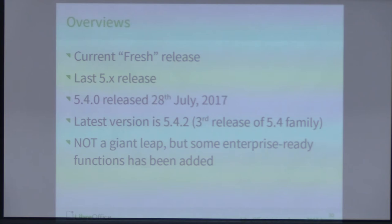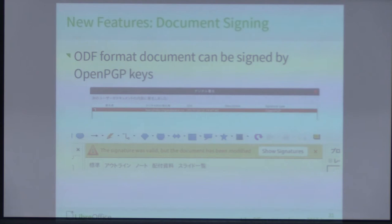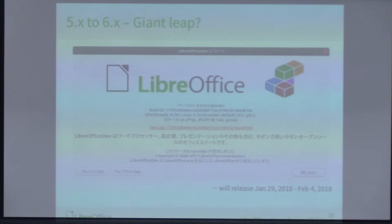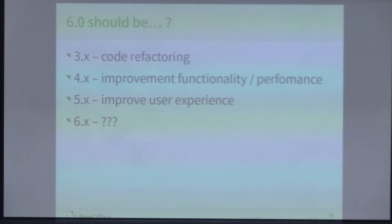I passed through fresh version 5.4. This is not a huge leap from the previous version, but it includes some enterprise-ready functionality like document signing. I hope 5.4 will be backported to the distribution. And for upcoming 6.0 — we changed from version 5.x to 6.x, which is a giant leap. It will be released early next year. To summarize the eras: 3.0 was a code refactoring phase; 4.0x was an implement functionality and performance phase; 5.0x was an improved user experience phase. I don't know yet about the 6.0x era — we need to discuss what we will focus on.